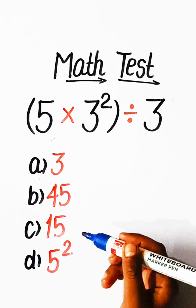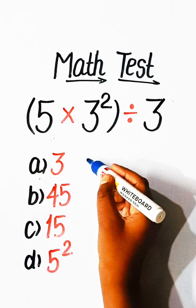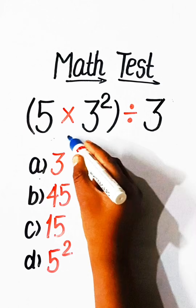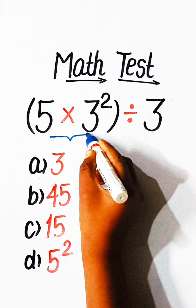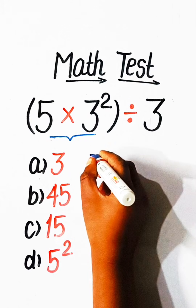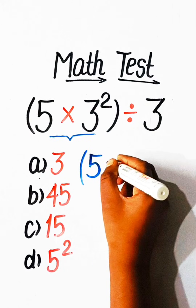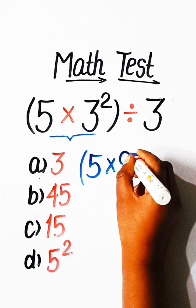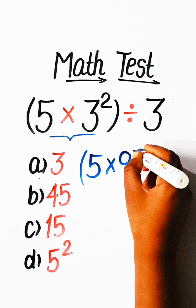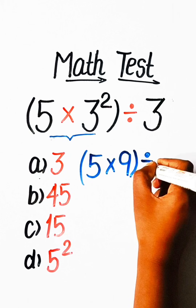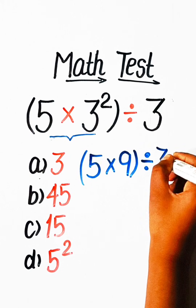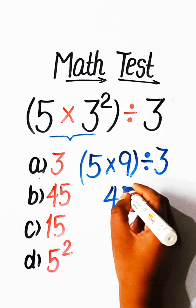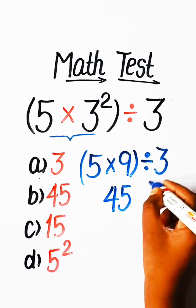In order to solve this, we have to solve the bracket part first. So we write: 5 multiply by 9 — since 3 squared is 9 — divided by 3. 9 fives are 45, divided by 3.